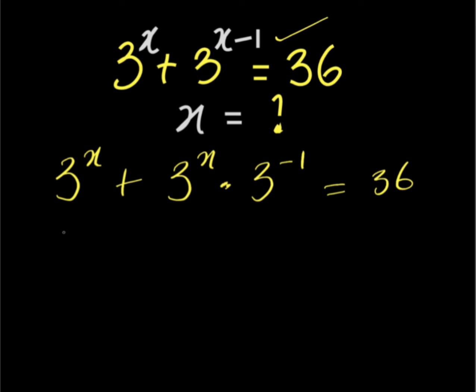Then 3 to the power of x is common, so you can factor it out. 3 power x divided by 3 power x is 1, plus 3 power x times 3 power minus 1 divided by 3 power x gives 3 to the power of negative 1. Everything is equal to 36.